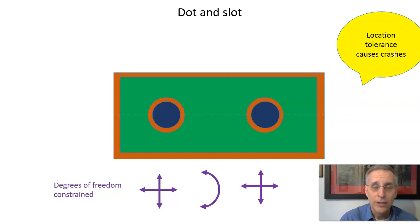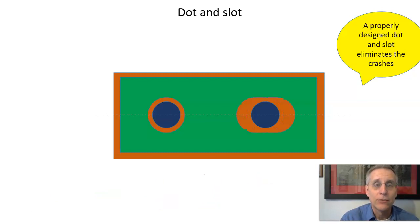That just makes a mess. When you have multiple features trying to constrain the same degrees of freedom, trying to work together to constrain something else, it causes problems. So what do we do?